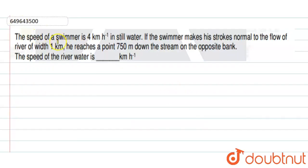Hello students, we are given a question here. The speed of a swimmer is given as 4 km per hour in still water. If the swimmer makes his strokes normal to the flow of the river of width 1 km, then he reaches a point 750 m down the stream on the opposite bank. We need to find the speed of the river.